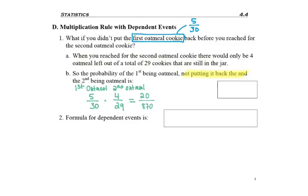We just had to adjust our second fraction. So we'd still multiply straight across to get 20 over 870. But what happened with that second fraction is that there was one less oatmeal cookie, so we were down to four oatmeal. And there was one less total cookie in the jar, so we were down to 29 total cookies. And that's how we get our 2.3%.